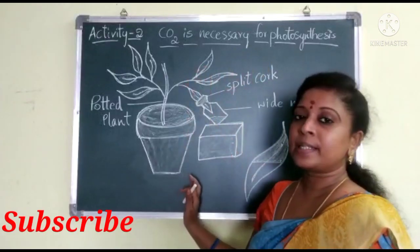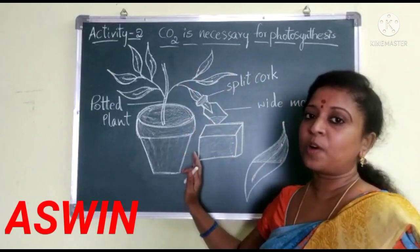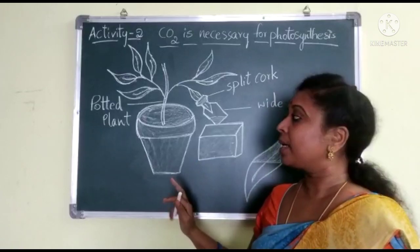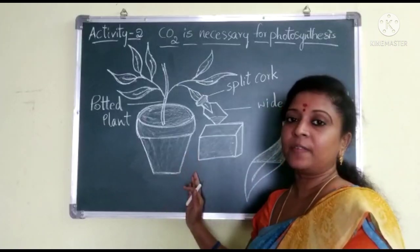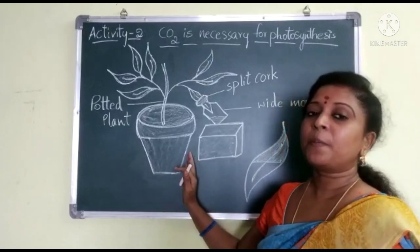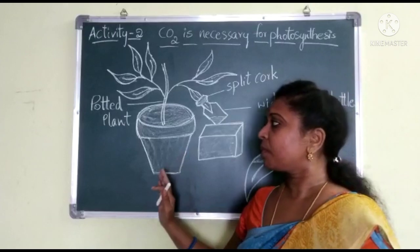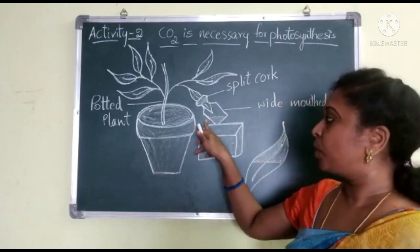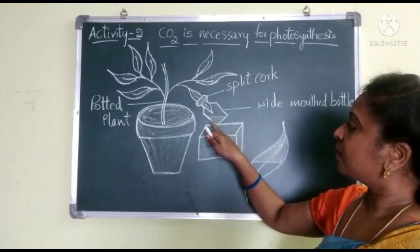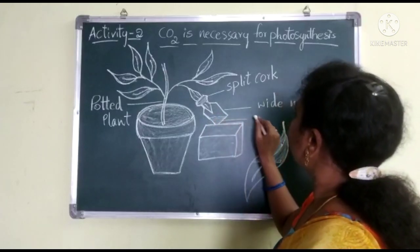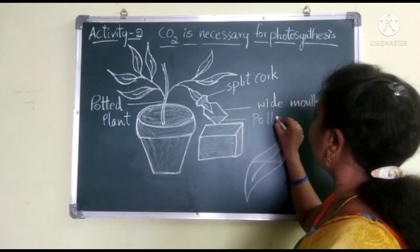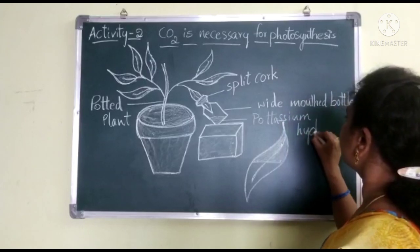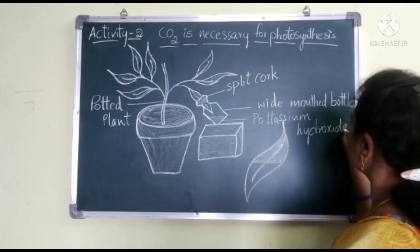To prove this experiment we need some apparatus. First of all, the main thing we need is a potted plant. It is kept in the dark for one week before performing this activity. Take a potted plant and take a wide-mouthed bottle. In the wide-mouthed bottle, add potassium hydroxide solution.